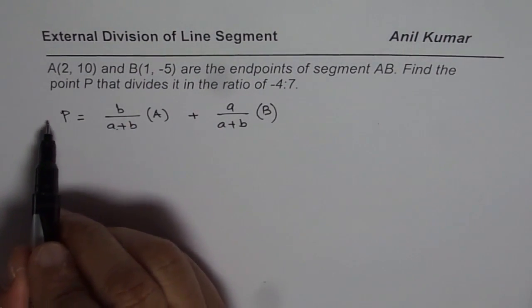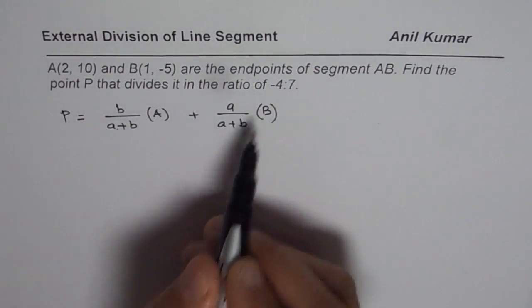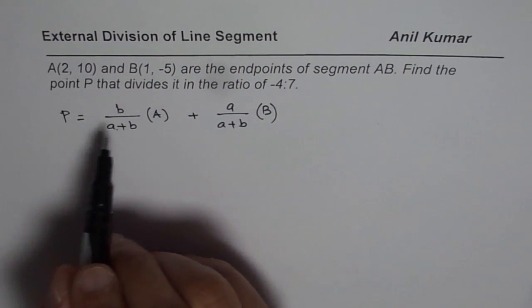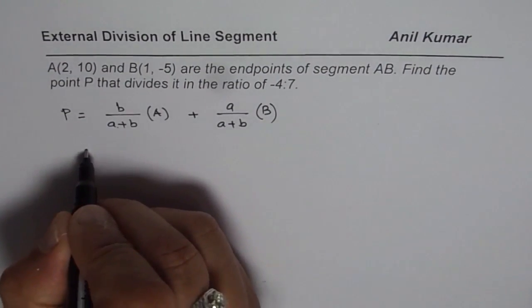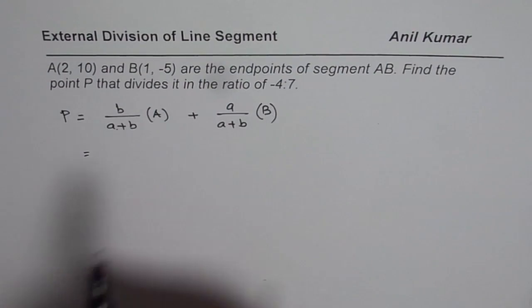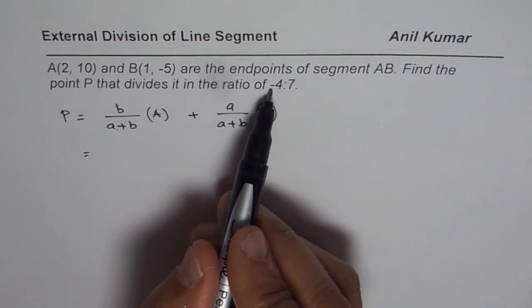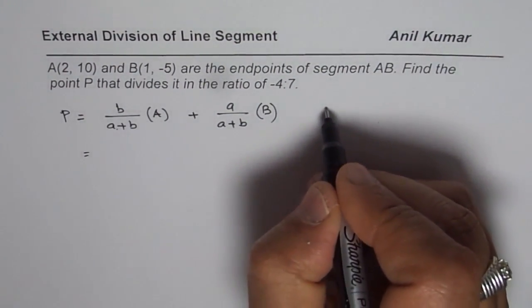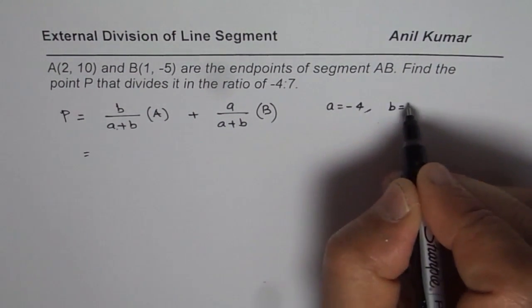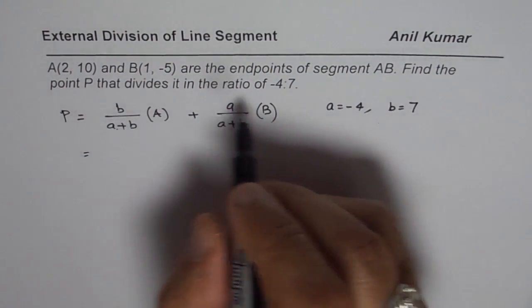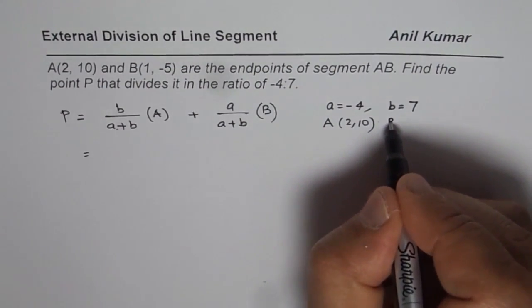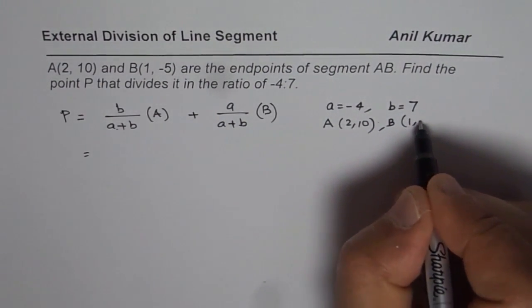Normally we write OP and OA when we are working with vectors since the point is with reference to origin. So now using these points we know A is 2,10, B is 1 and -5, ratio is -4 is to 7. So we have A equals to -4, B equals to 7. Point A is given as 2,10, point B is given as 1,-5.